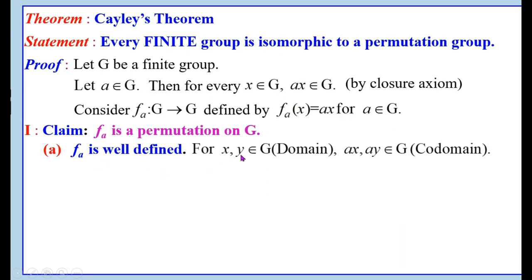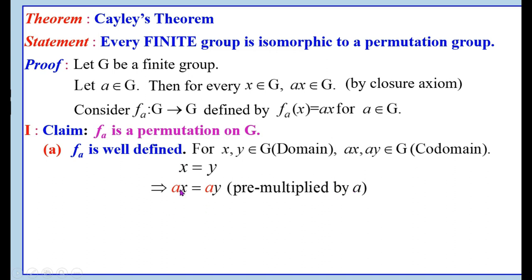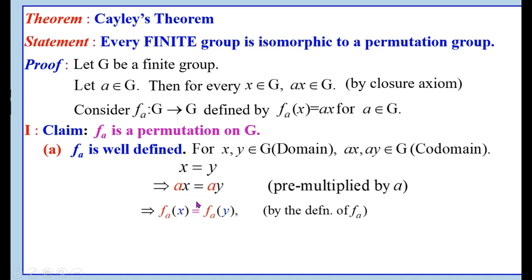Choose two elements X and Y from the domain. Since A belongs to G, by the closure property, AX and AY both belong to the codomain group G. Let X equal Y; pre-multiplying by A gives AX equal to AY. By the definition of F_A, AX equals F_A(X) and AY equals F_A(Y). Therefore, AX equals AY implies F_A(X) equals F_A(Y). Thus, F_A is well-defined.